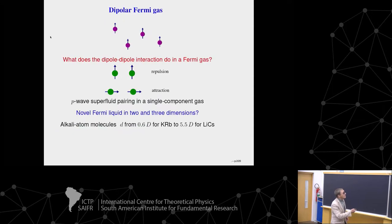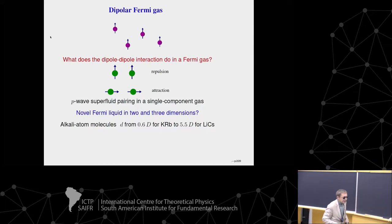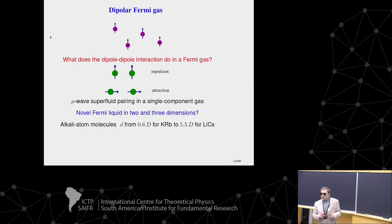This is our dipolar Fermi gas. Two dipoles oriented like that repel each other; two dipoles oriented like that attract each other. So what does the dipole-dipole interaction do in a Fermi gas? For example, Misha Baranov, giving his last lecture on fermions, explained how the P-wave pairing between identical fermions can lead to a superfluid transition.